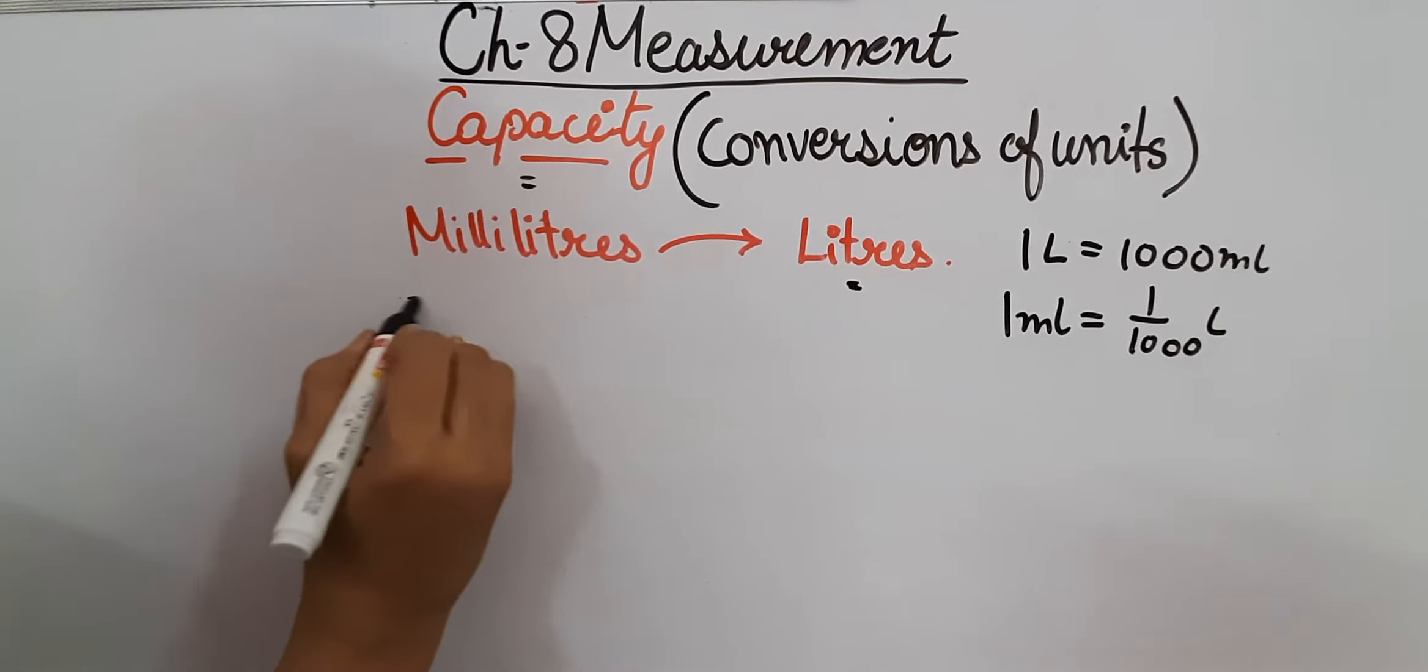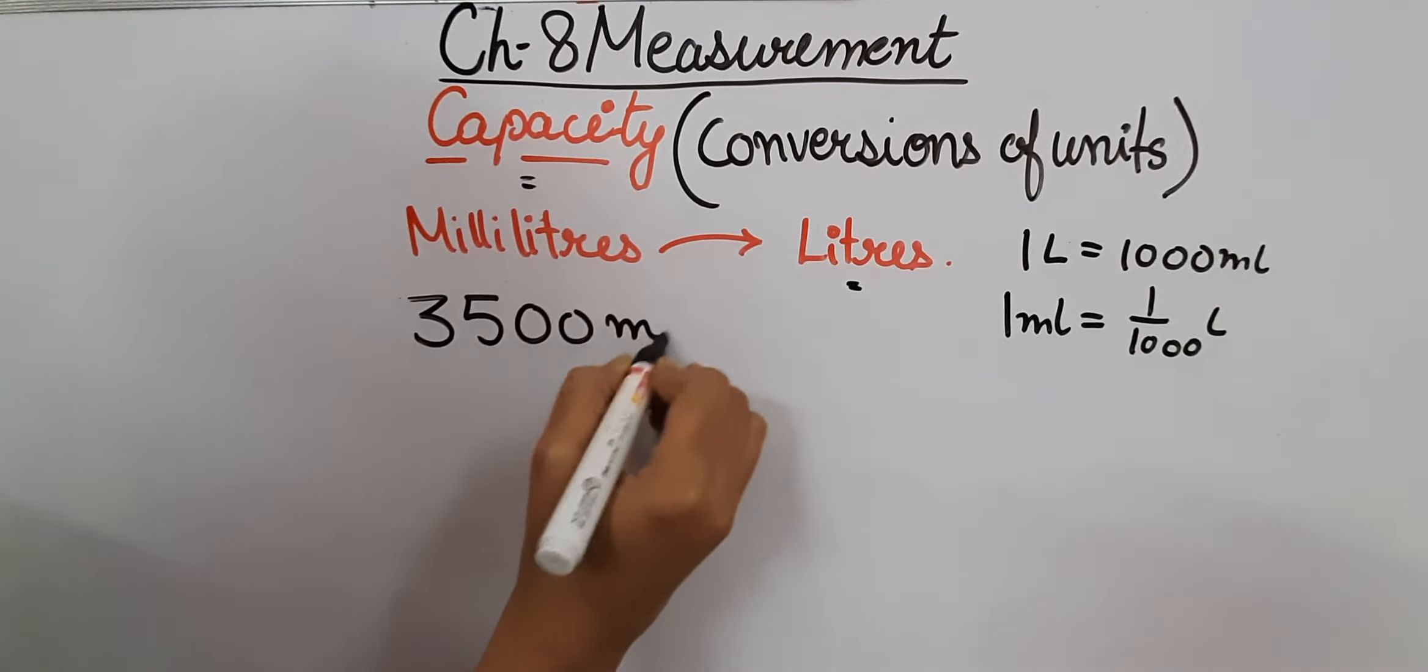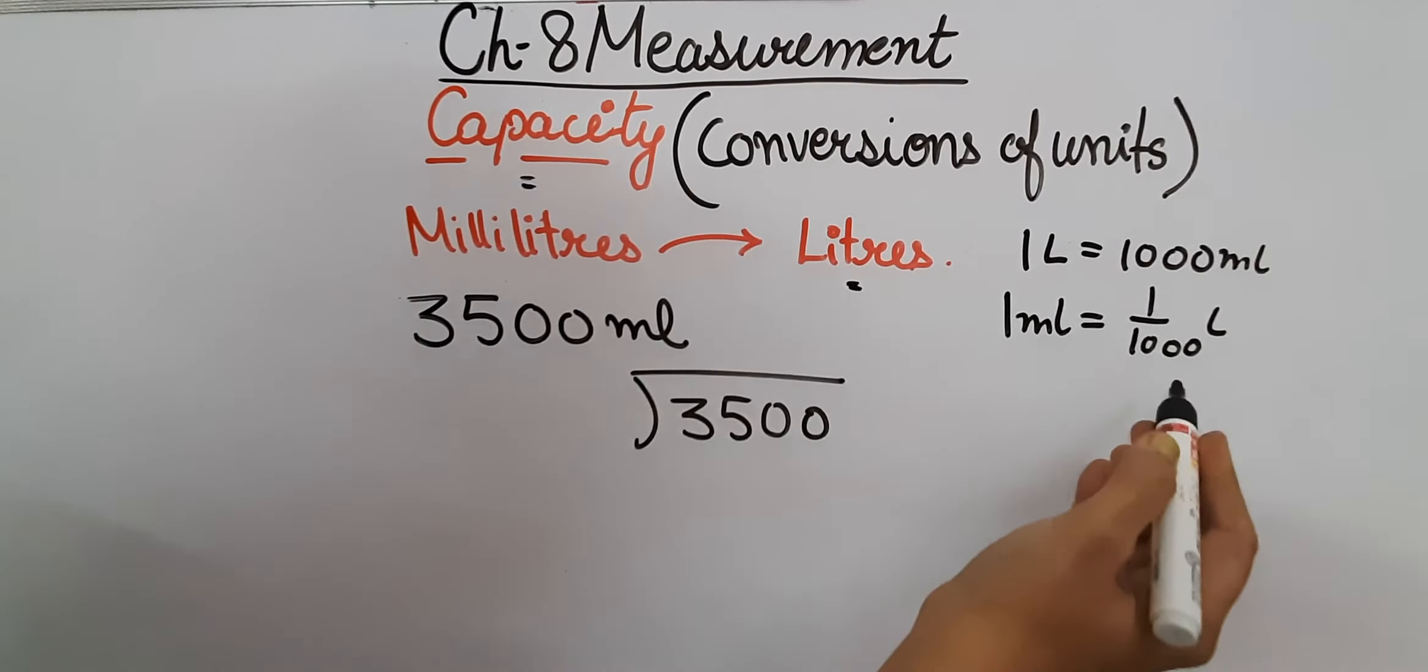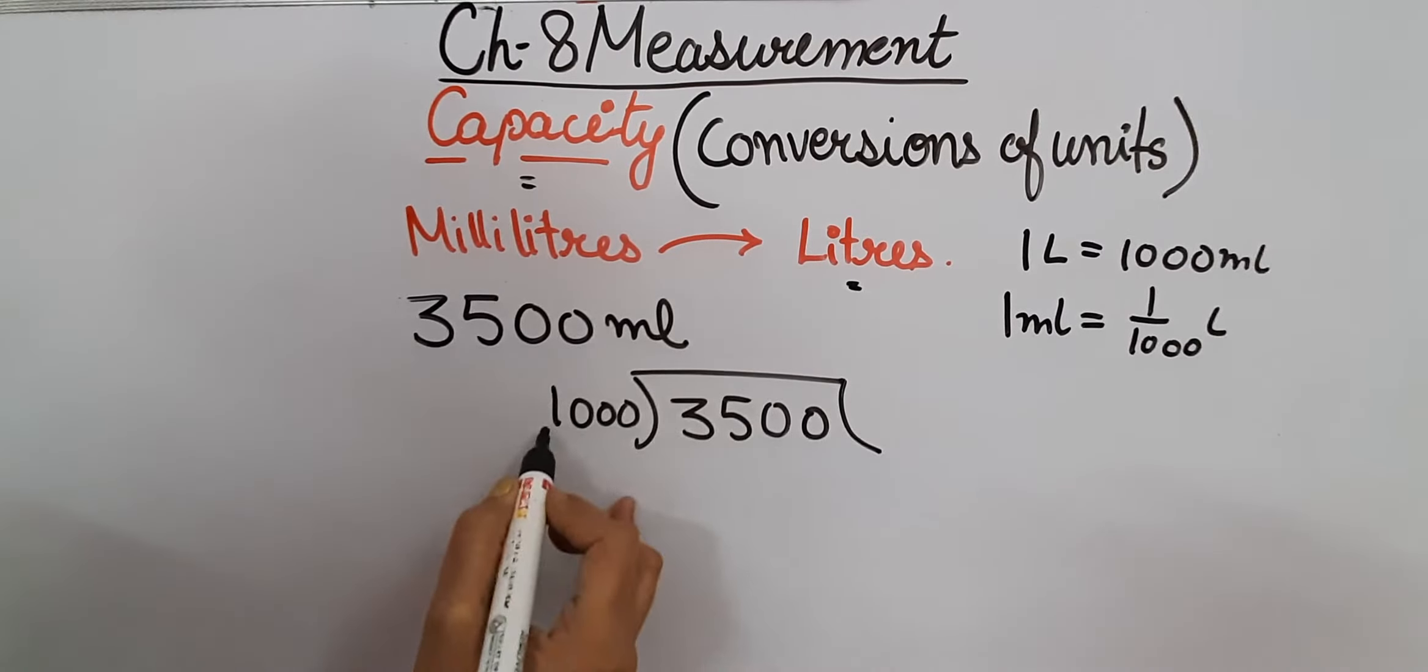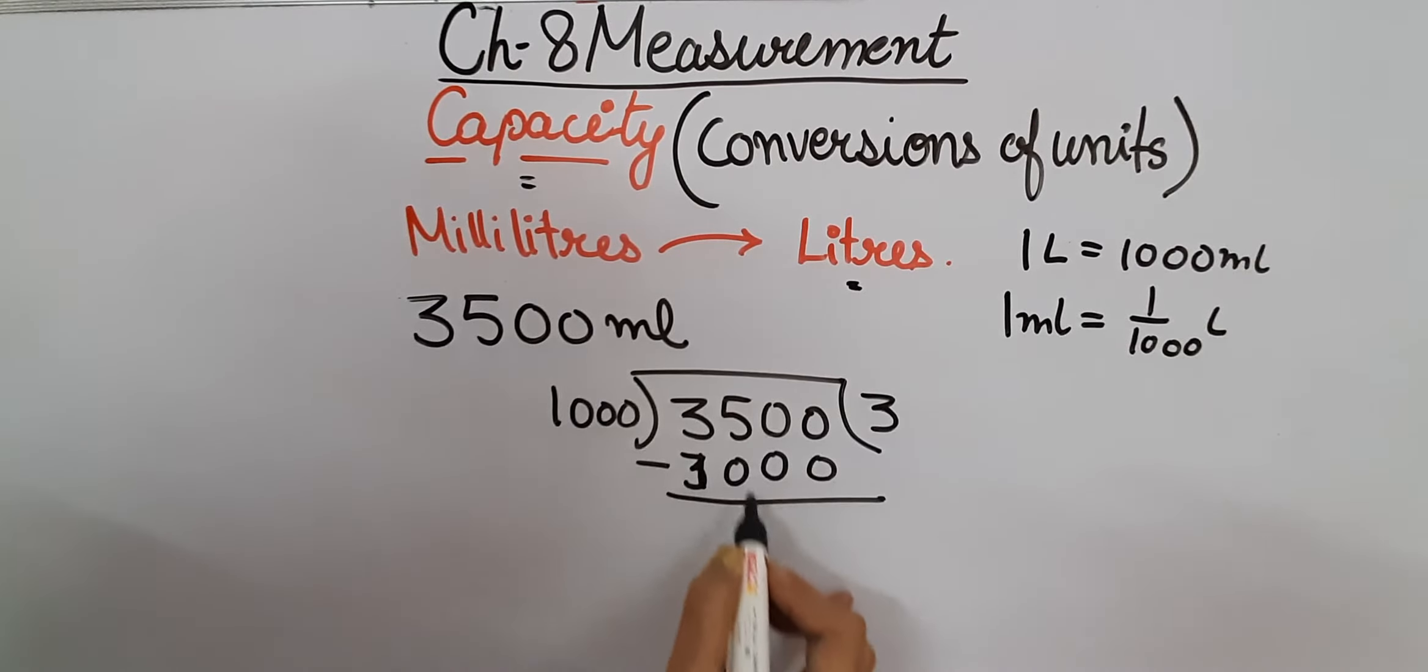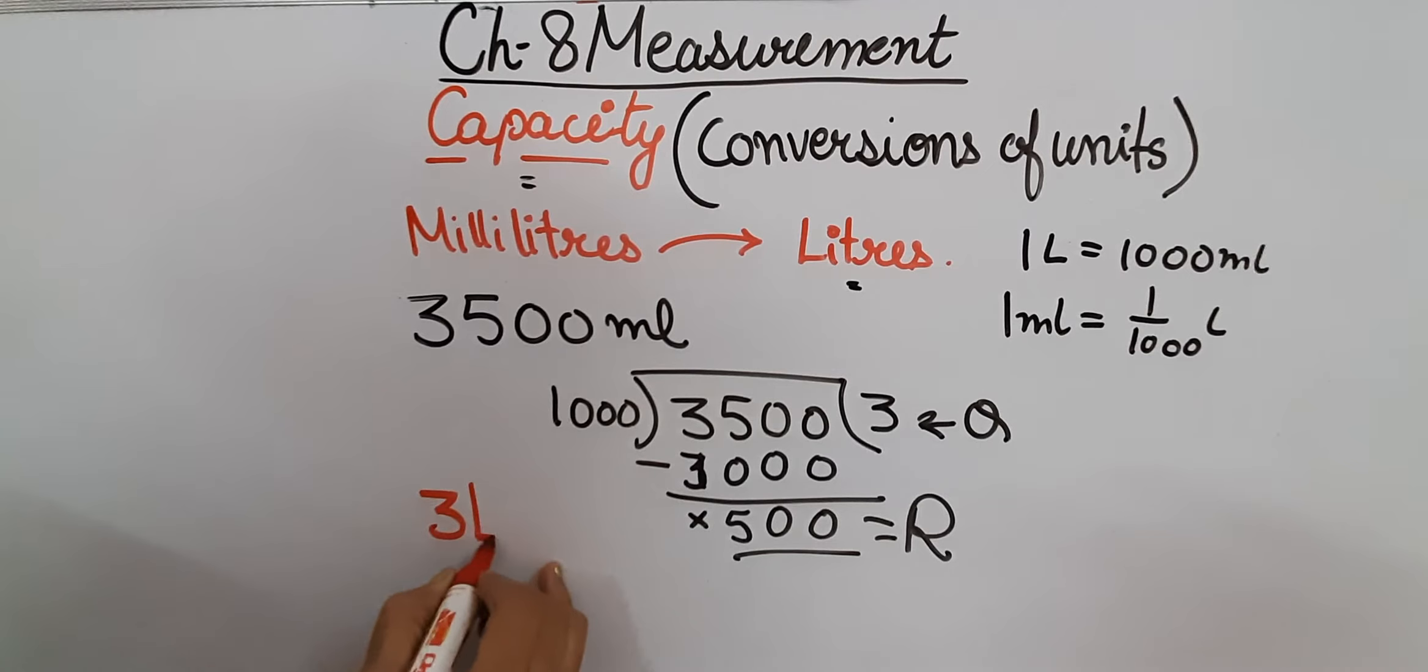Let's take another example: 3500 milliliters, and we have to convert it into liters. So we will divide 3500 by 1000 as we divided earlier. So 1000 into 3000, we will subtract it, we will get 500 as remainder and 3 as quotient. As we did earlier, the quotient will be the larger unit, that is 3 liters, and the remainder will be the smaller unit, that is 500 milliliters, and that's our answer.